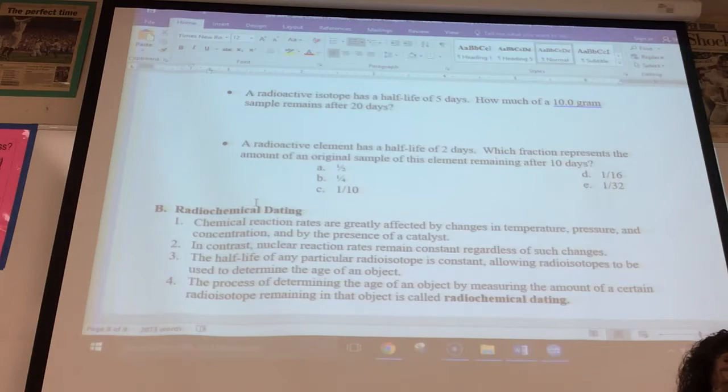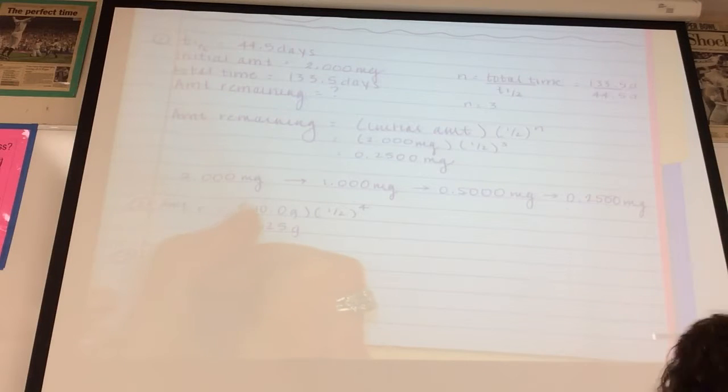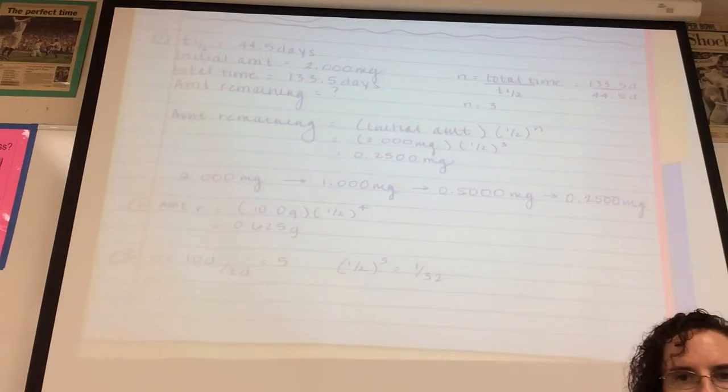Okay, the last problem is very, very similar, but they don't give you an initial amount, so you just assume that it's 1, make it simple. It says a radioactive element has a half-life of two days. Which fraction represents the amount of an original sample of this element remaining after 10 days? So how many half-lives did you go through? Five. So all you do is one-half to the fifth power. Because you know in terms of n that you had 10 days divided by the half-life, so that's 5.